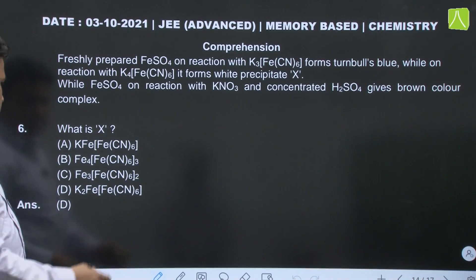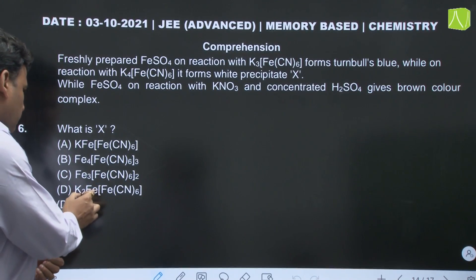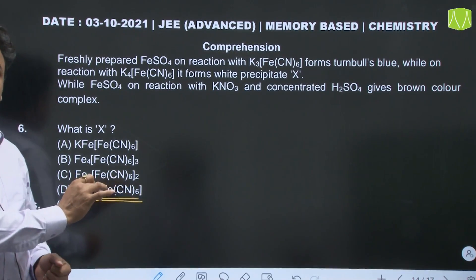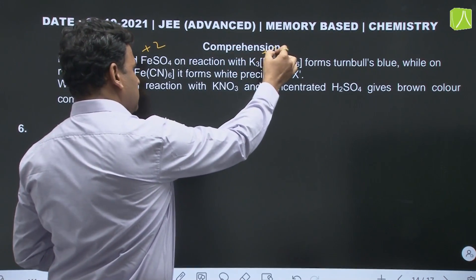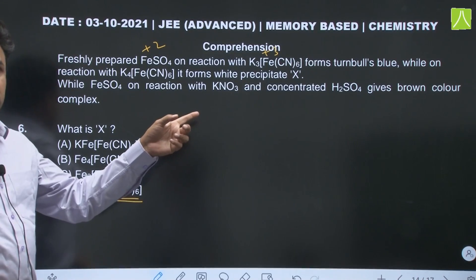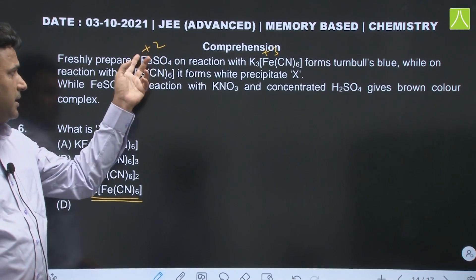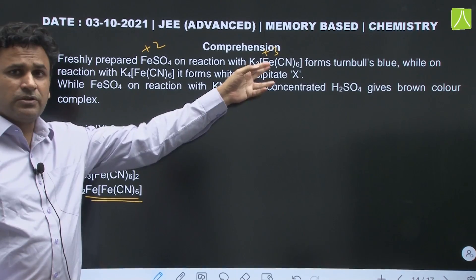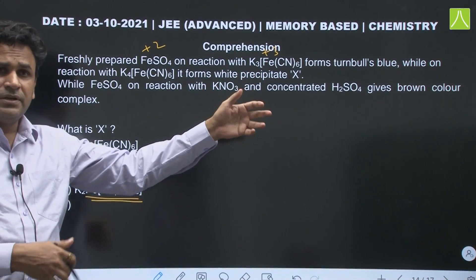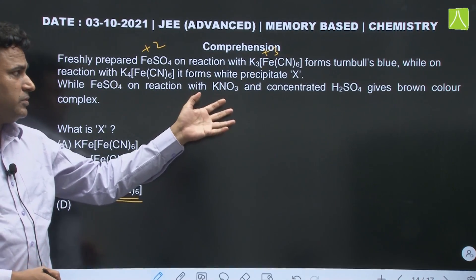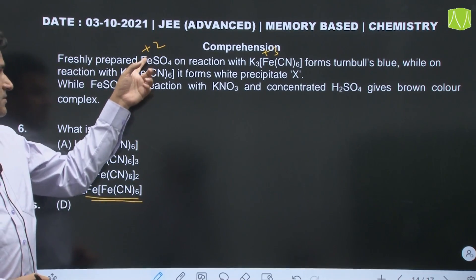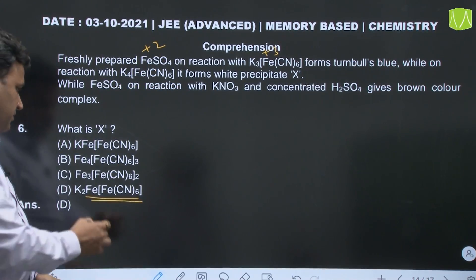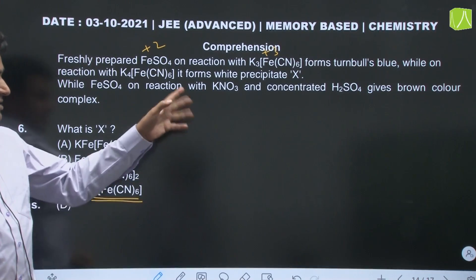So what is X? X is going to be white precipitate in which both the atoms are present in +2 oxidation number. When the iron is in +2 and +3 then this is Turnbull's blue, or otherwise if this is +3 and +2 then there is going to be formation of Prussian blue. But Turnbull's blue and Prussian blue are found to be same compound, but ferrous with ferrocyanide is going to give us white precipitate. So D is correct answer, X is this.